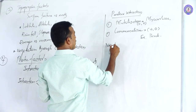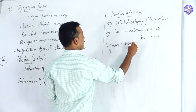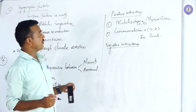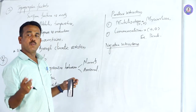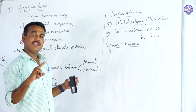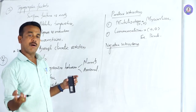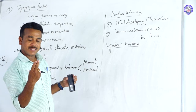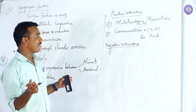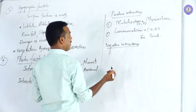Negative interaction: the involvement of two partners where one partner attains benefit and another organism is harmed. So in interaction, one is the benefactor and one is harmed. Based on the nature, negative interaction can be classified into steps.